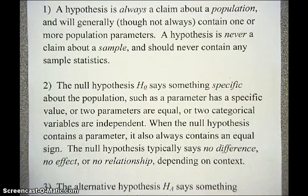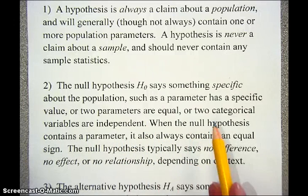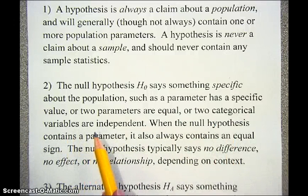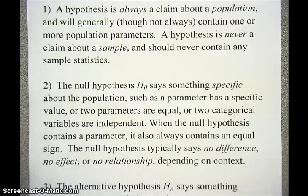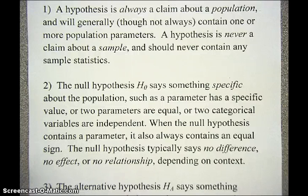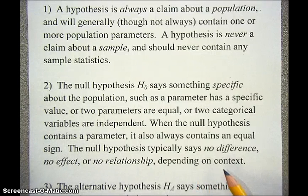Secondly, your null hypothesis says something specific about the population, such as a parameter has a specific value, or maybe two parameters are equal, or perhaps two categorical variables are independent. When the null hypothesis contains a parameter, it also always contains an equal sign. The null hypothesis generally says there is no difference between some parameter and this value, or there's no effect in an experiment, or there's no relationship, depending on the context of the problem you're working on.